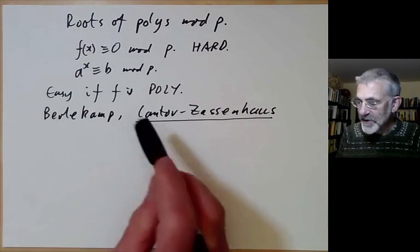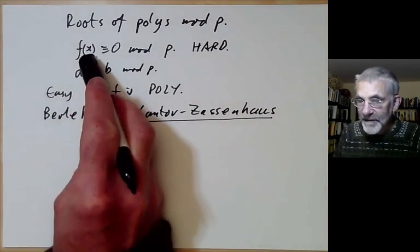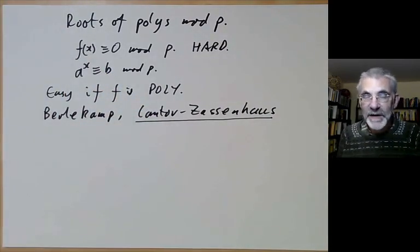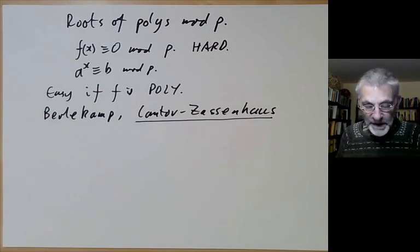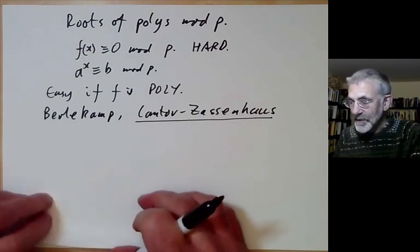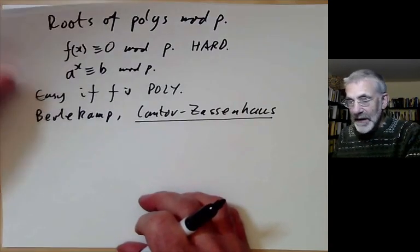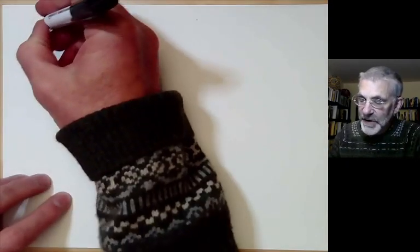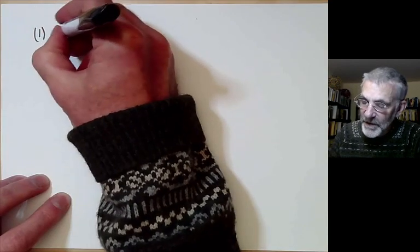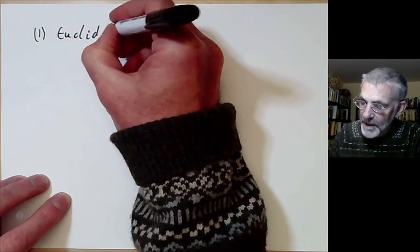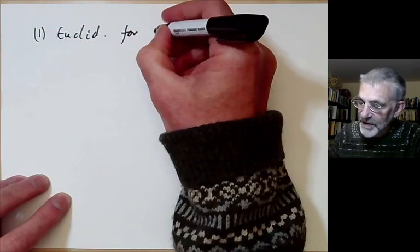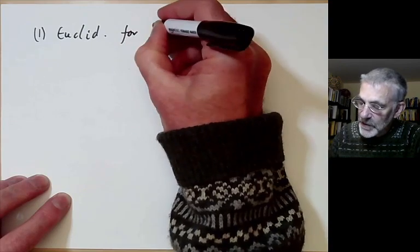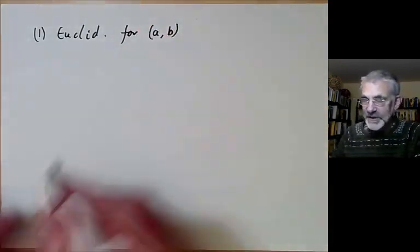I'm going to describe the main idea of the Cantor-Zassenhaus algorithm for finding roots. This is a special case of factorising f into irreducible factors — finding the roots is just the same as finding the linear factors. In order to do this, we're going to need several other algorithms that we've discussed earlier. First of all, we have the Euclidean algorithm for finding the greatest common divisor of two numbers a and b, which is very fast.